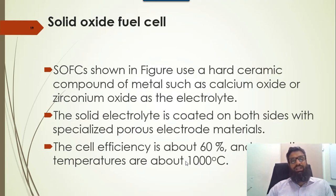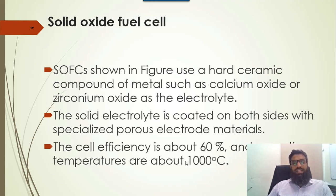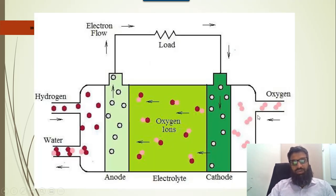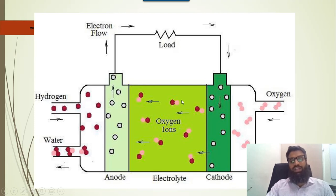Then we have solid oxide fuel cell. It uses a hard ceramic compound of metals such as calcium oxide or zirconium oxide as the electrolyte. The solid electrolyte is coated on both sides with specialized porous electrode material. The cell efficiency is 60% while the operating temperature is approximately 1000 degrees Celsius. This cell is totally different from the remaining cells because it uses oxygen as an ion. The hydrogen will directly combine with the oxygen ion to form water and electricity.